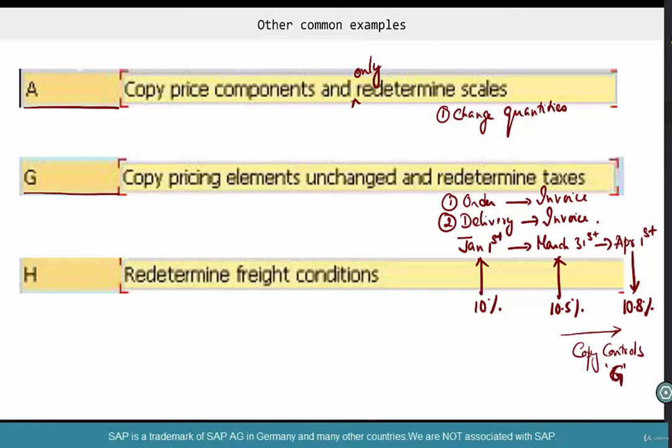Another example is H. H is redetermine freight conditions. When do you want to redetermine freight conditions? At this point, you should get a hang of these pricing conditions. At this point, you should get a pretty good hang of these pricing types.